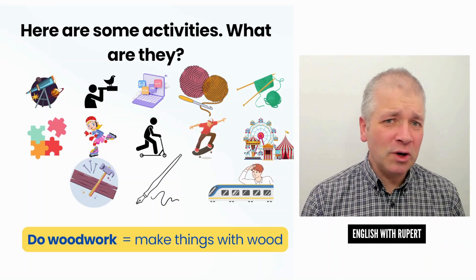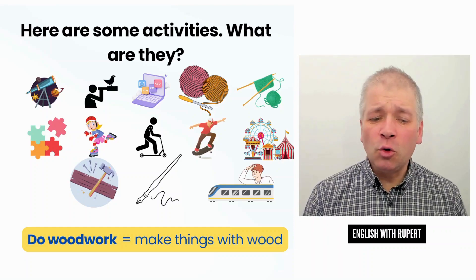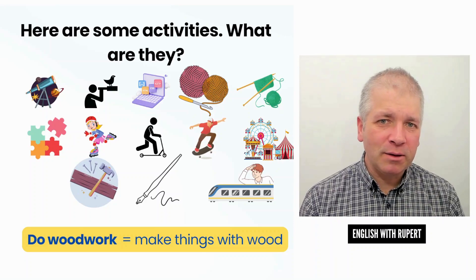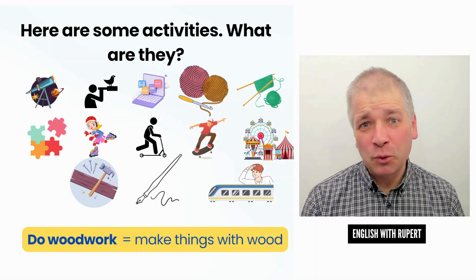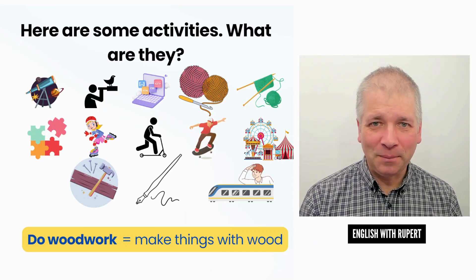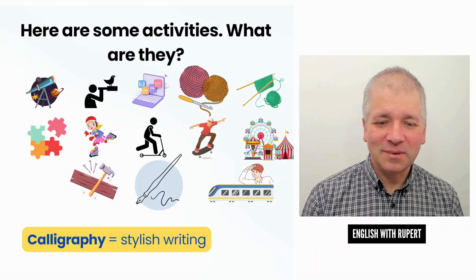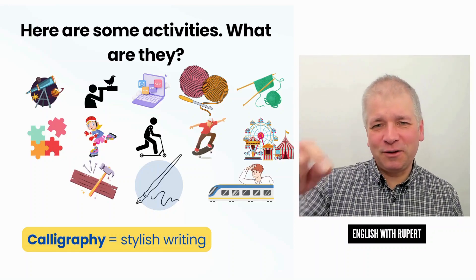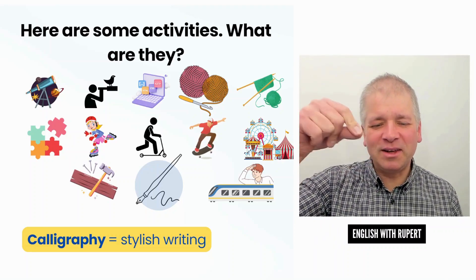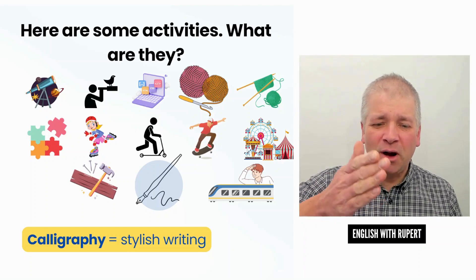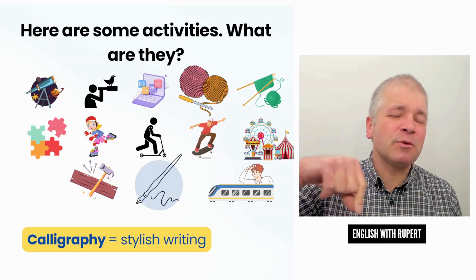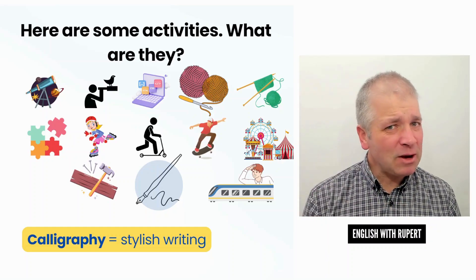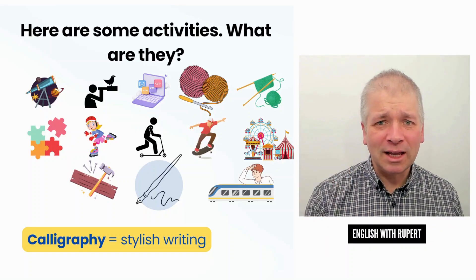Do you enjoy doing things with wood? This is called woodwork — making things with wood, sometimes called carpentry as well. Calligraphy is a special type of writing. Look at the device being used to write here — it's got a different style and end, enabling you to make nice shapes and pretty patterns as you write. This special type of writing is called calligraphy.